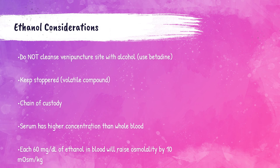Alcohol will raise the blood's osmolality level. Around 60 mg/dL of ethanol will raise the osmolality level by 10 milliosmoles per kilogram. Osmolality is the concentration of a solution expressed as the total number of solute particles per kilogram in the blood.